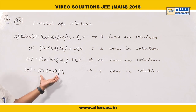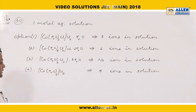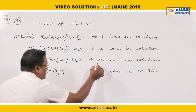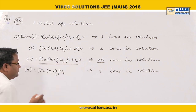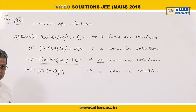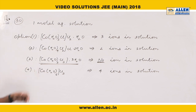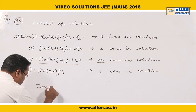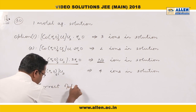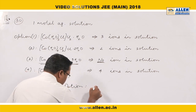Another compound gives four ions in solution: one coordination sphere and three chloride ions. Since the number of particles given in solution is minimum for one of the options — the compound that does not dissociate — its freezing point will be maximum. Hence, the correct option for this question is option 3.